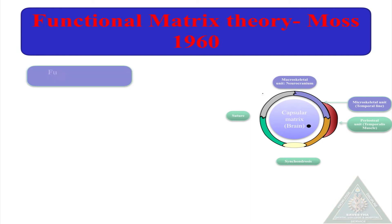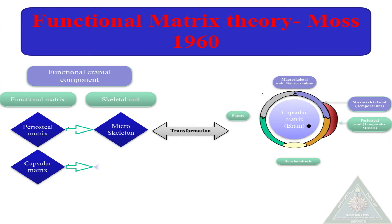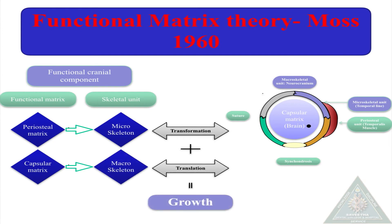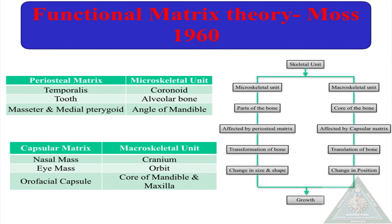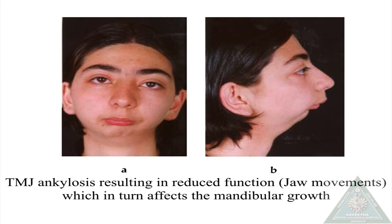The functional matrix theory by Moss states that the cranial component consists of a functional matrix and a skeletal unit. The periosteal matrix affects the microskeletal unit, causing transformation of bone, while the capsular matrix affects the macroskeletal unit, causing translation of bone — both producing bone growth. An example is the neurocranium, where the brain is the capsular matrix, the temporalis muscle is the periosteal matrix, the sutures are the microskeletal unit, and the cranial vault is the macroskeletal unit. As the muscle functions and the brain grows, the cranial vault also increases in size. Here are the various periosteal matrices with their corresponding microskeletal units, and the capsular matrices with their corresponding macroskeletal units.